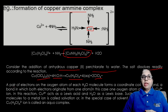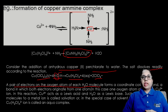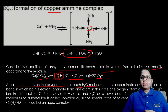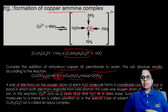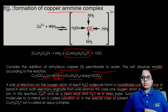A pair of electrons on the oxygen atom of each water molecule forms a coordinate covalent bond — a bond in which both electrons originate from one atom. In this case, the atom is oxygen. The electrons are donated to the cuprous ions. So Cu²⁺ acts as a Lewis acid and water acts as a Lewis base. Such binding of solvent molecules to a metal ion is called solvation; in the special case of water, it is called hydration.